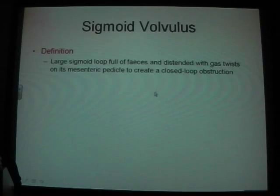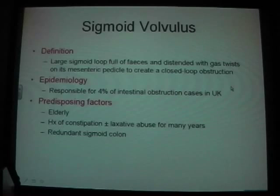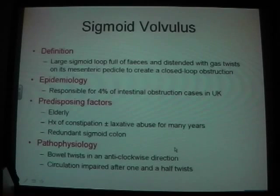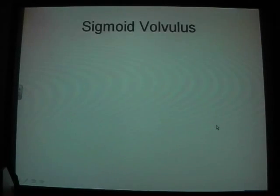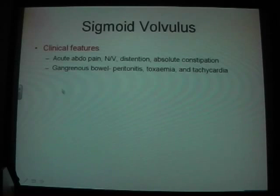Sigmoid volvulus is a large swollen loop full of faeces and distended with gas, which twists on its mesenteric pedicle to create a closed loop obstruction. It's responsible for 4% of intestinal obstruction in the UK. It occurs in elderly people, particularly because they tend to become chronically constipated, which is a common cause for sigmoid volvulus. The pathophysiology is that it twists in an anti-clockwise direction and the circulation is impaired. Clinical features are acute abdominal pain, nausea, vomiting, distension, absolute constipation, and if serious with gangrenous bowel, peritonitis, toxaemia, and tachycardia.